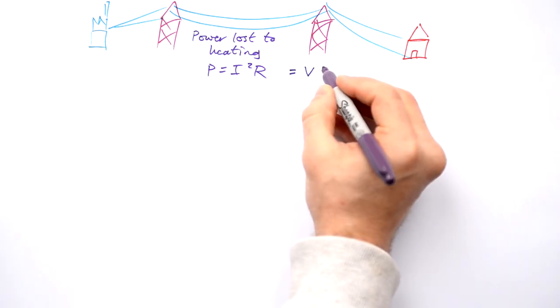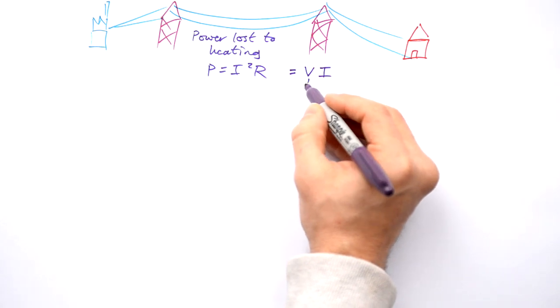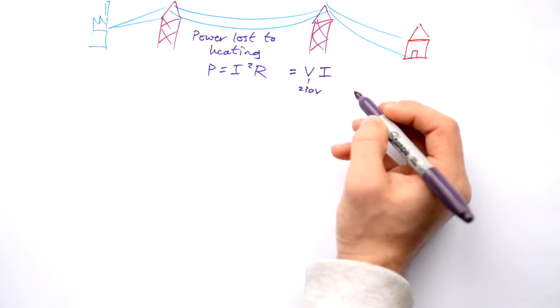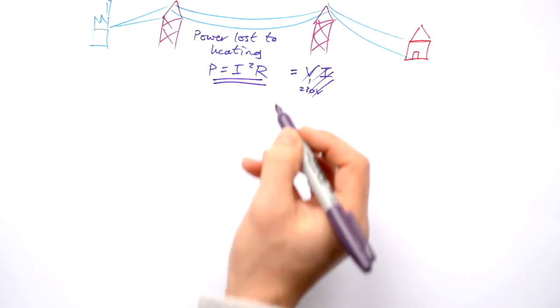Some people think that they can calculate the power lost due to heating using VI, and that V being 230 volts, but that's actually not true because that PD, that voltage, needs to be the PD across the wire. So we stick with I squared R.